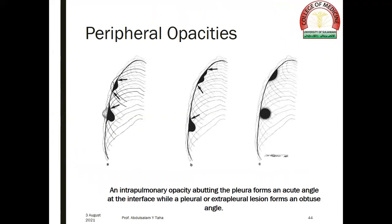Peripheral opacities: when you have an opacity in the periphery of the lung, it might be intrapulmonary, pleural, or extrapleural. If the angle between the peripheral opacity and the chest wall is an acute angle, then the opacity is intrapulmonary. If the angle is obtuse, then the lesion is pleural or extrapleural. An intrapulmonary opacity abutting the pleura forms an acute angle at the interface, while a pleural or extrapleural lesion forms an obtuse angle.